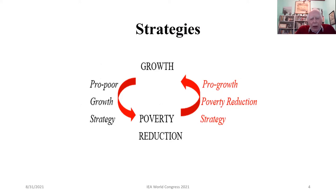But the reverse link from poverty reduction to subsequent growth is still somewhat of a conjecture. The link from growth to poverty reduction is well known, and the kind of strategy economists have promoted is what we call a pro-poor growth strategy. The link between poverty reduction and growth, on the other hand, is still to be confirmed. But I think we have plenty of evidence from the studies in this project that a direct intervention on trying to reduce poverty is a good thing for economic growth.